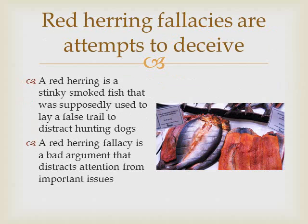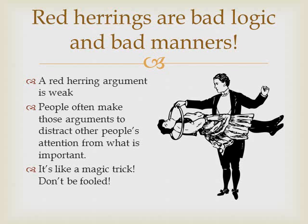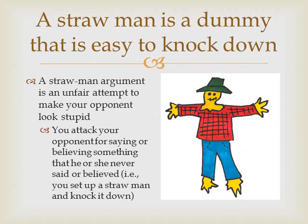Red herring fallacies are a particular kind of fallacy of relevance and are attempts to deceive. A red herring is a stinky smoked fish that was supposedly used to lay a false trail to distract hunting dogs. A red herring fallacy is a bad argument that distracts attention from important issues. Red herring arguments are bad logic and bad manners. A red herring argument is weak — in other words, there is a high probability that the conclusion is false even if all the premises are true. People who make red herring arguments are trying to distract other people's attention from something that is important. It's like a magic trick. Don't be fooled.